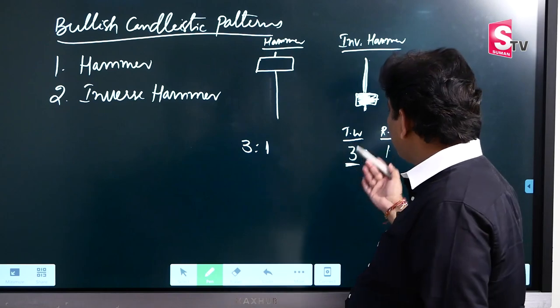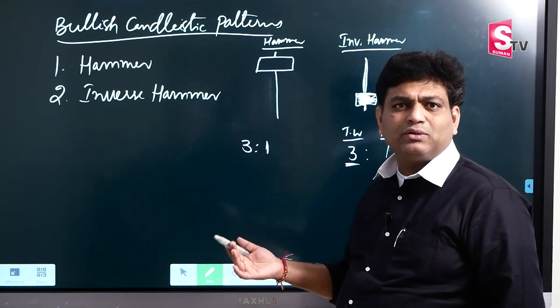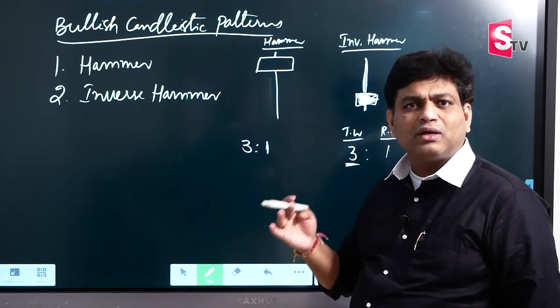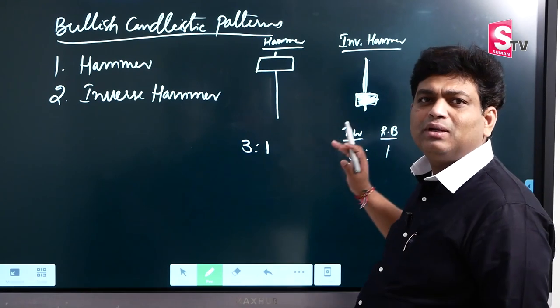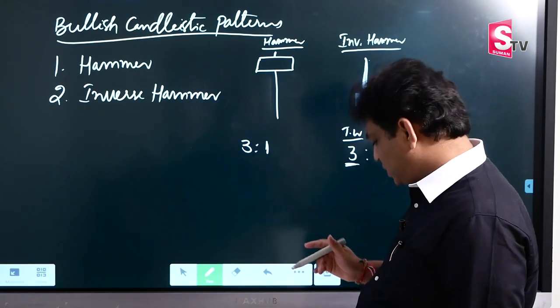The top wick can be four times, five times, or six times — that's not a problem. But minimum three times the real body is required for the top wick to form the inverse hammer.